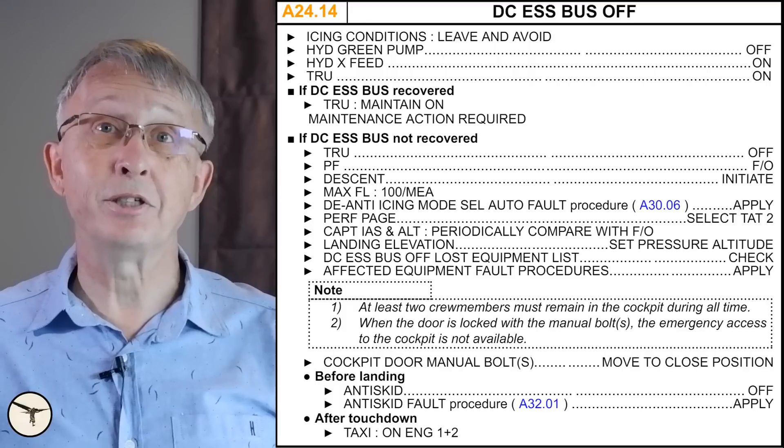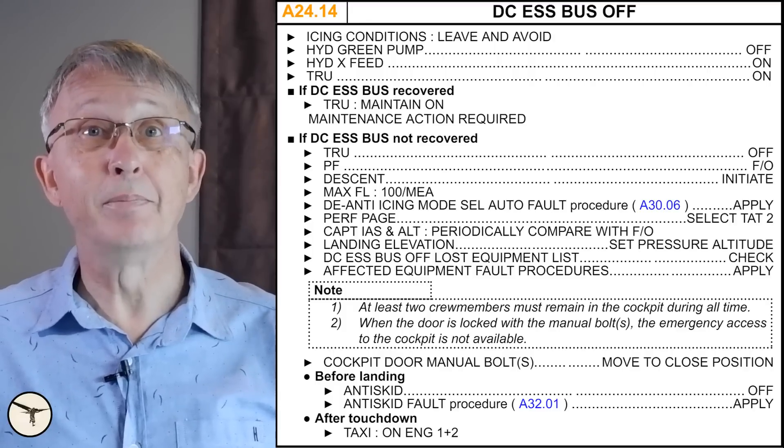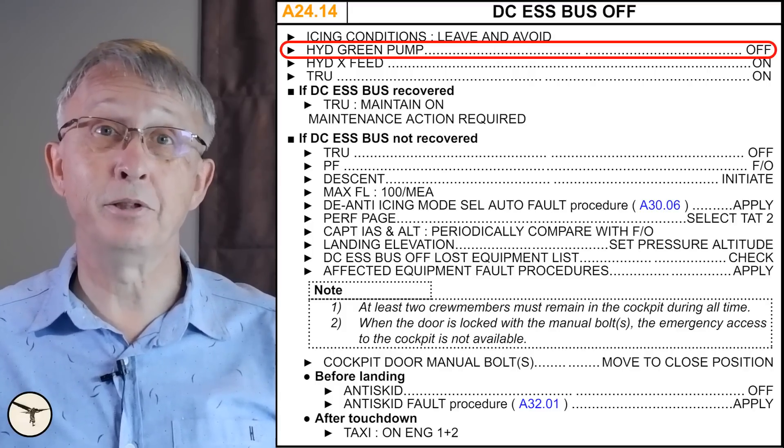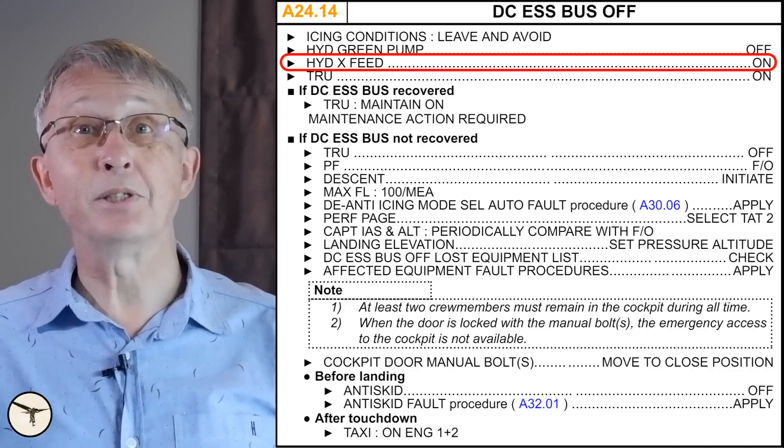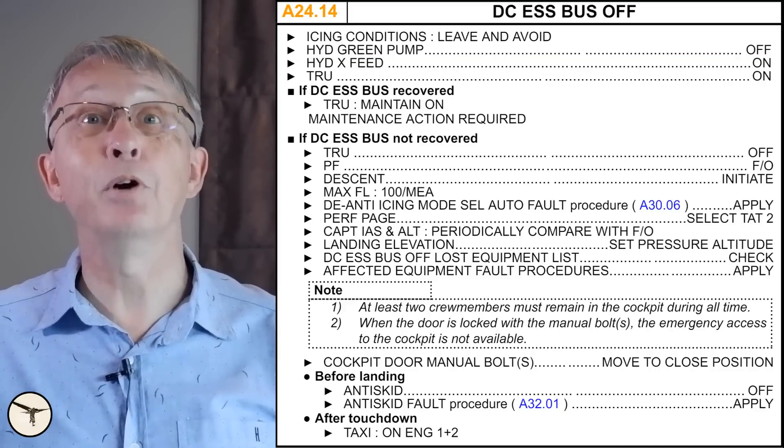While you do not have to remember which bus is controlling or monitoring what, it is nice to understand that a failure to one part of the electrical system may influence other systems in a way that do not always look obvious. So when this essential bus, for example, has failed, the checklist tells you to select hydraulic green pump off, and the hydraulic cross-feed on. This becomes even more complex when more than one bus has failed.